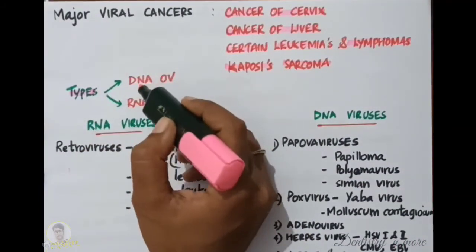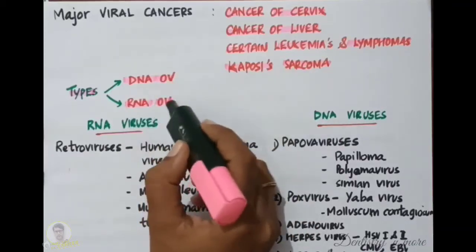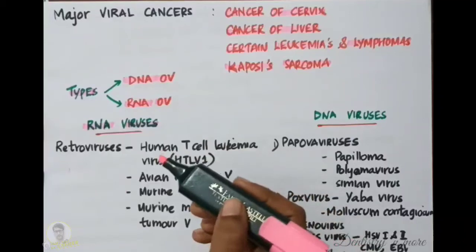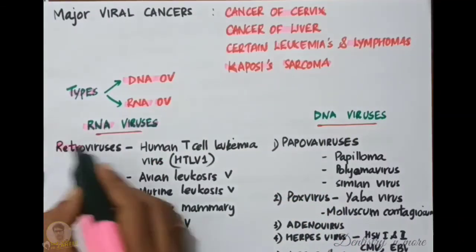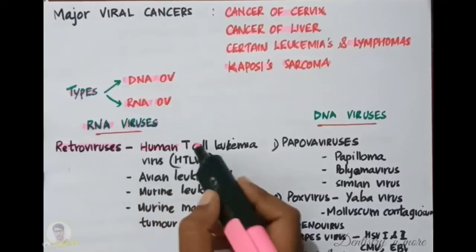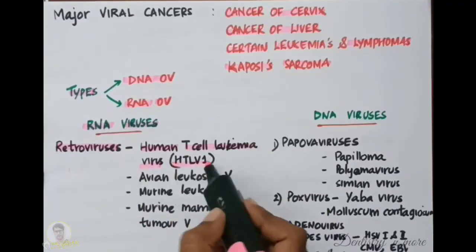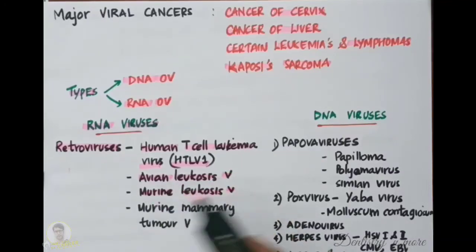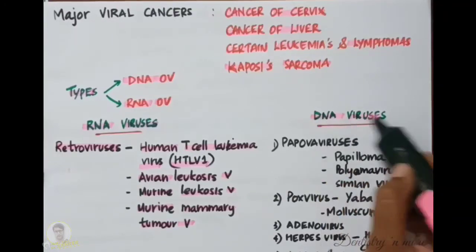There are two types of oncogenic viruses: DNA oncogenic viruses and RNA oncogenic viruses. Common RNA oncogenic viruses are retroviruses. Examples include human T-cell leukemia virus (HTLV-1), avian leukosis virus, murine leukosis virus, and murine mammary tumor virus.